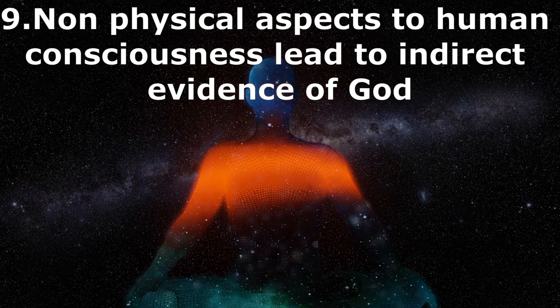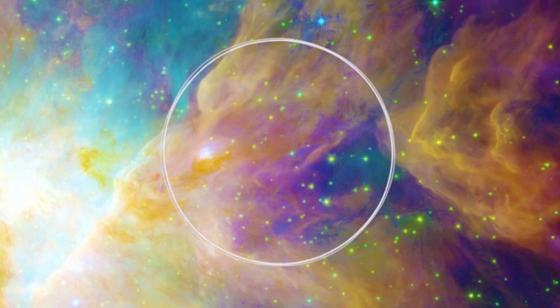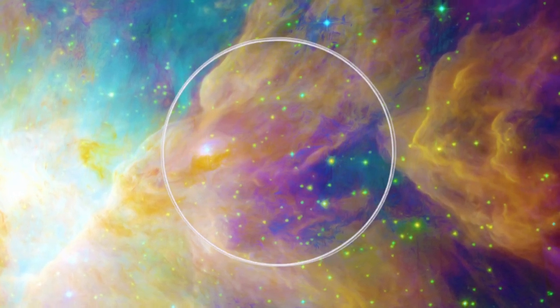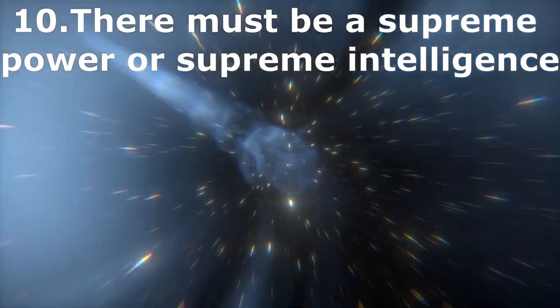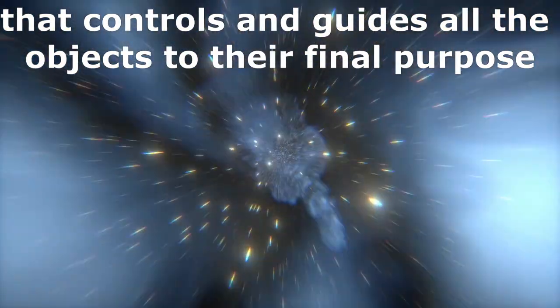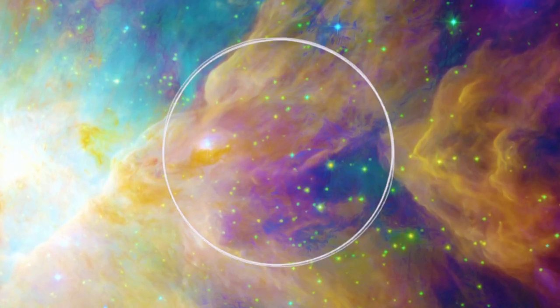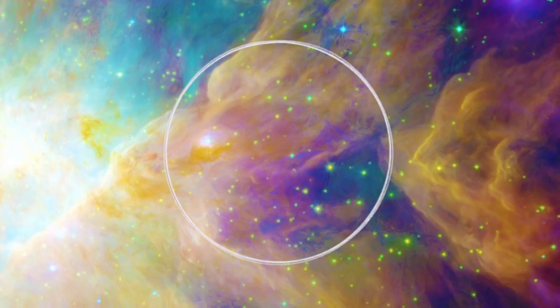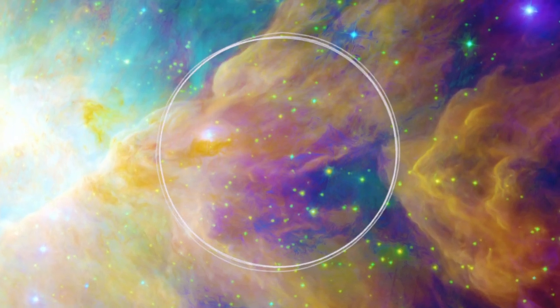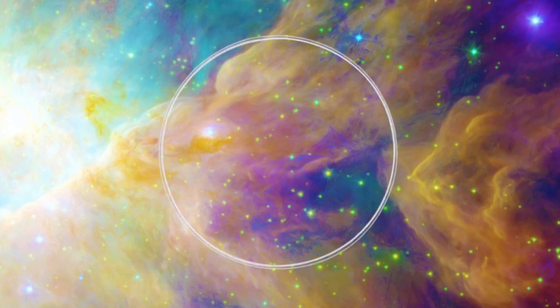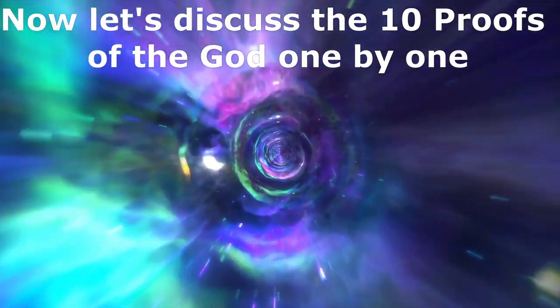Number nine, non-physical aspects to human consciousness lead to indirect evidence of God. They're just getting silly now. That's absolute nonsense and in no way can be demonstrated. So now we're down to seven. Number ten. There must be a supreme power or supreme intelligence that controls and guides all the objects to their final purpose. I mean, at least with the first four or five, there were actual demonstrable sciences that were being squeezed about to try and fit the theist thinking. But this one is just being plucked out of nowhere. Maybe because they just wanted to make it ten and really struggled. So, okay, this should really be called, maybe we have six scientific proofs for the existence of God. But even then we're reaching.